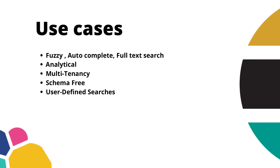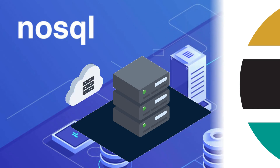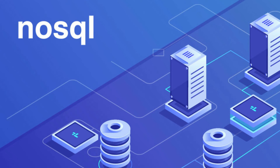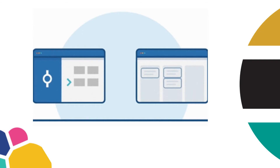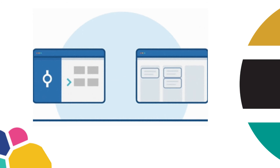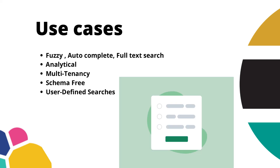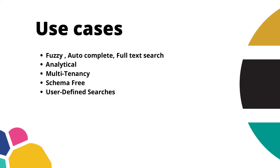The next point is schema-free, which helps you leverage data storage. Suppose you are dealing with big data and have multiple customers where different users can have completely different documents. For example, if you are providing user surveys or questionnaires as a service, it's likely that different surveys have completely different fields. That makes it easier to store the data, which is why Elasticsearch is schema-free.